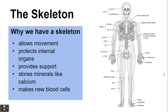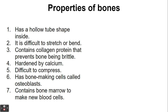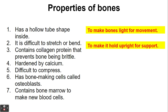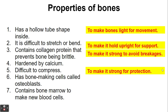But how does the skeleton actually do all of these things? It's to do with the properties of bones. You don't need to know the information on the left-hand side here, but it's worth linking these to what bones do. They have a hollow tube shape inside, which makes bones really light for movement. They're difficult to stretch or bend, and they contain collagen, which is a protein that prevents bone being brittle, and are hardened by calcium, and are difficult to compress. These properties make bone strong so it can support us upright, help avoid breakages, and protect our organs.